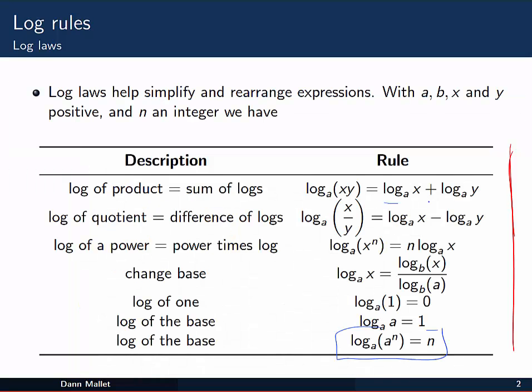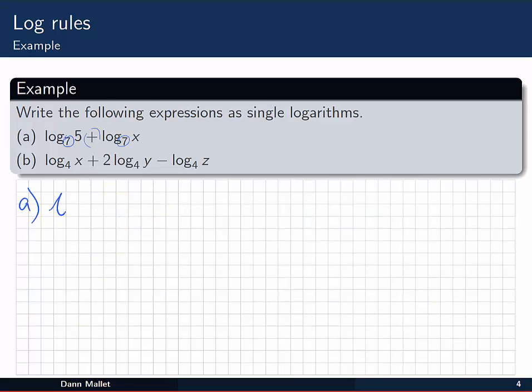Back in the rules, we saw that logs with the same base combined by addition can be rewritten as the log of a product. So log base 7 of 5 plus log base 7 of x is equal to log base 7 of 5x, the product.